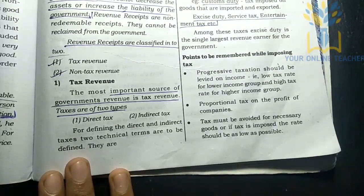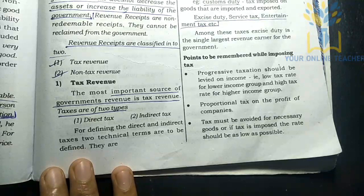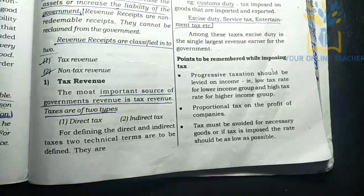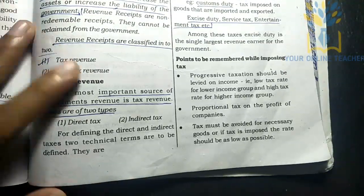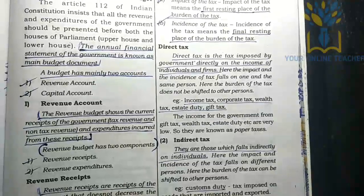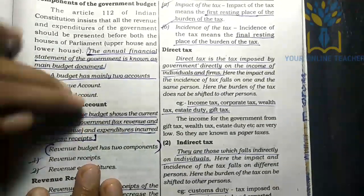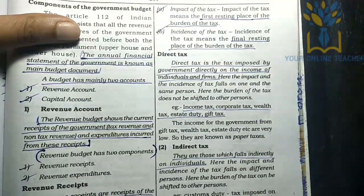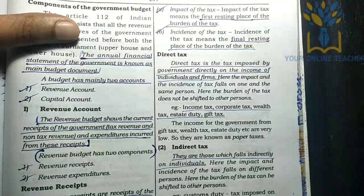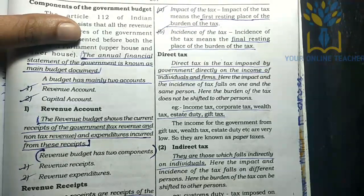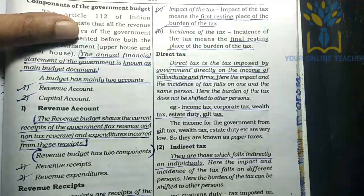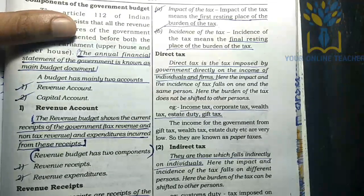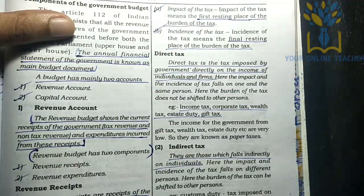Tax revenue includes direct tax and indirect tax. We also learn about the impact of tax and the incidence of tax. The impact of tax is the first resting place of the burden of tax, while the incidence of tax is the final resting place.